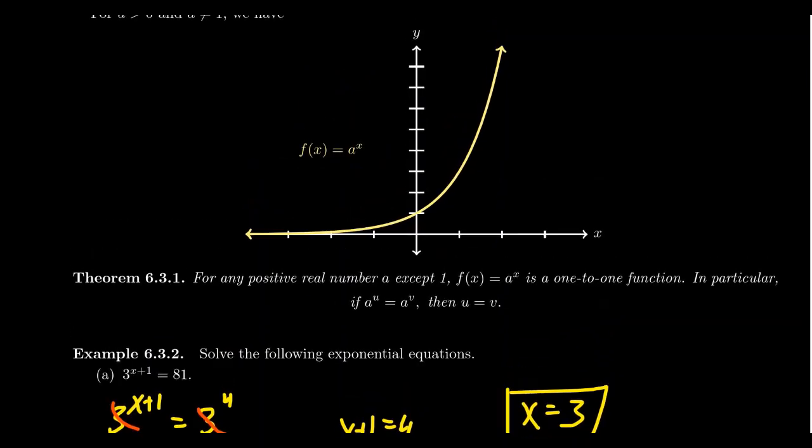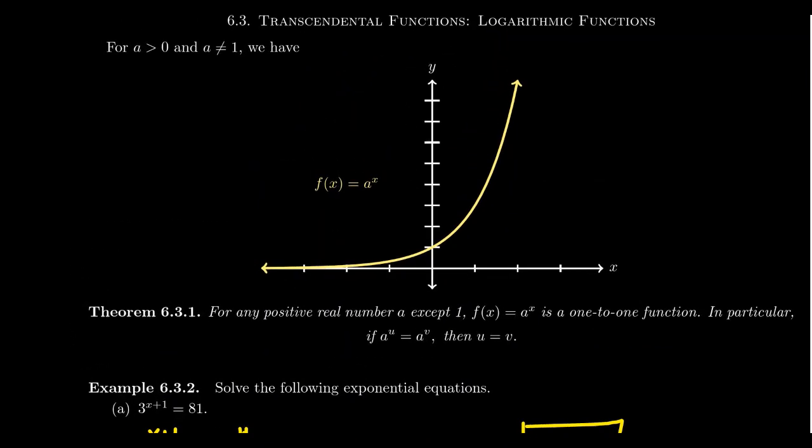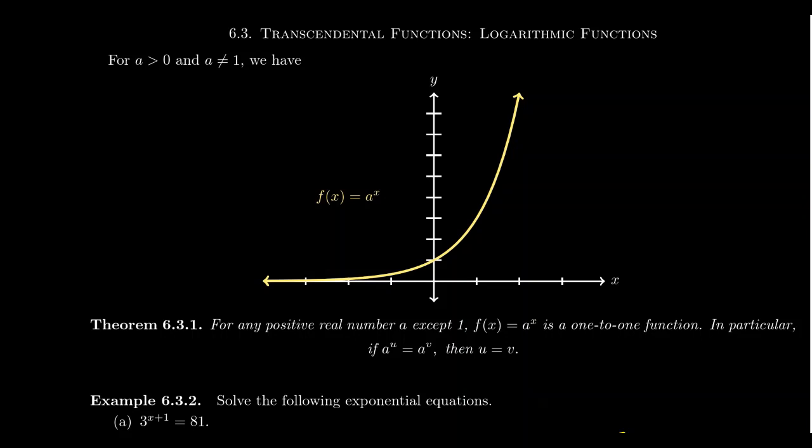All right. Well, that was great. We were able to solve some exponential equations using this one-to-one property. But what happens when you run across an equation like the following? What do you have, like, 2^x = 5? Okay. As you start scanning for powers of 2, it's like 2^1 is 2, 2² is 4, 2³ is 8. Well, 5 was in between the two. So, the solution x, I can tell you, since the function is increasing, it's got to sit somewhere between 2 and 3. Great. But can I do better than that? Well, you could try to use some type of, like, maybe rational exponent.